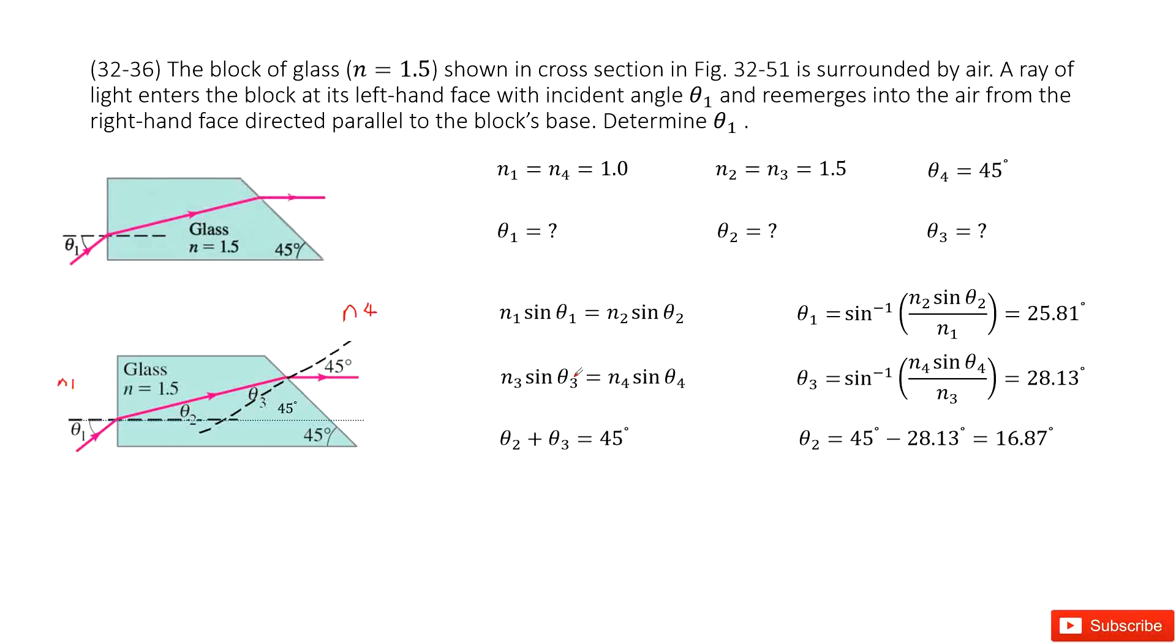What we don't know is theta 1, theta 2, and theta 3. But theta 4 we know. Very easily you can see from this equation, N3 and N4 are given, theta 4 is given. So very easily you can get theta 3 by converting this equation.